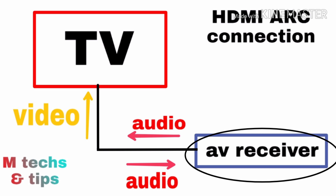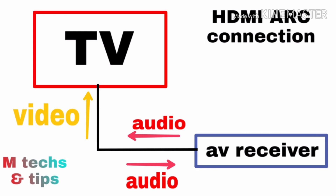DVD with home theater or Blu-ray player with home theater. The AV receiver uses an HDMI cable connected to the HDMI ARC port. With the AV receiver, we can support a single cable setup.